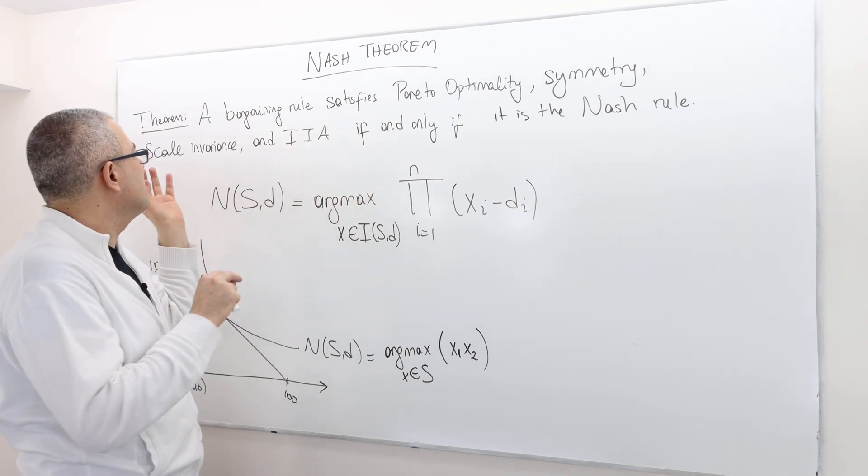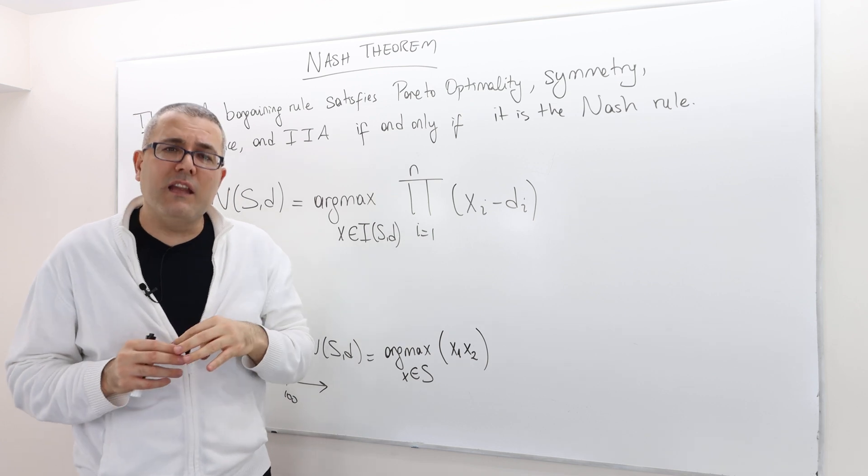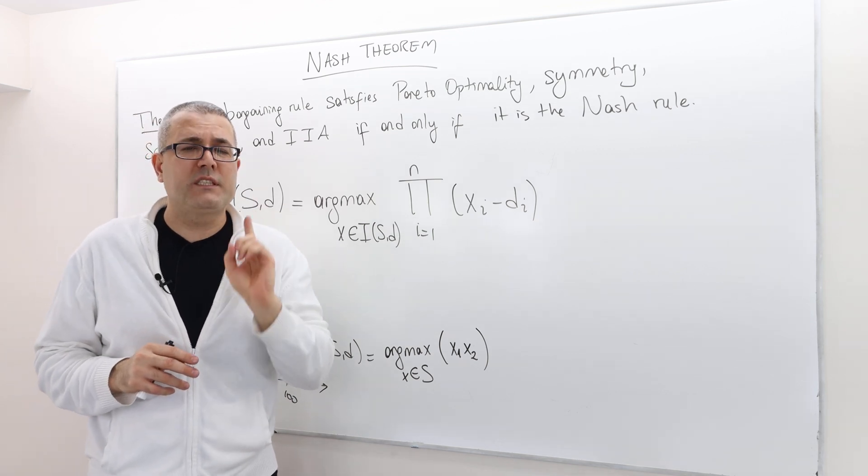Pareto-optimality, symmetry, scale invariance, IIA. Well, then, there's only one such rule.